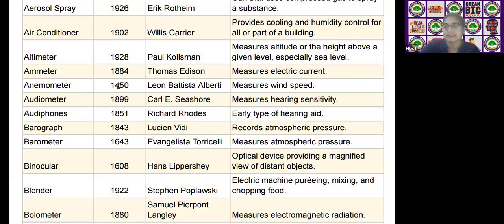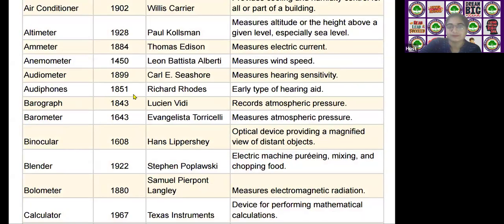The next device is the anemometer. It was invented by Leon Battista Alberti in the year 1450. The anemometer measures wind speed.